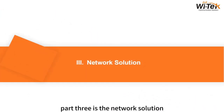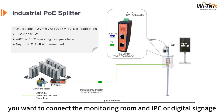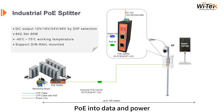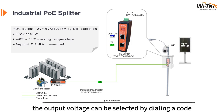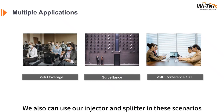Part 3 is the network solution. For example, if you want to connect the monitoring room to an IPC or digital signage, but the old camera does not support PoE in, you can use a splitter to split PoE into data and power — data can send back the camera feed and power the digital signage. Although this splitter has only one DC port, the output voltage can be selected by dialing a code, so there are more optional devices. We can also use our injector and splitter in these scenarios.